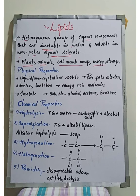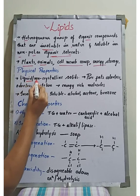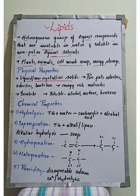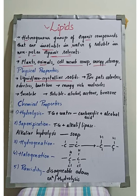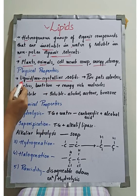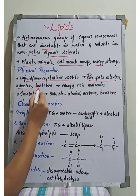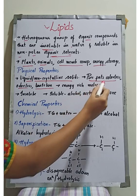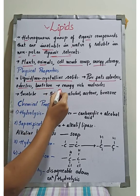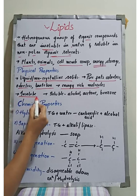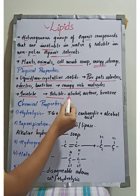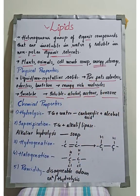Now let's look at the physical properties of lipids. These are liquids or non-crystalline solids. Lipids can be in liquid form or as non-crystalline solids — unlike crystalline solids such as sugar which form crystals, or ghee which is a solid but not crystalline. Pure fats are colorless, odorless, and tasteless. These are energy-rich molecules used for energy storage, and they are insoluble in water but soluble in organic solvents such as alcohol, acetone, and benzene.